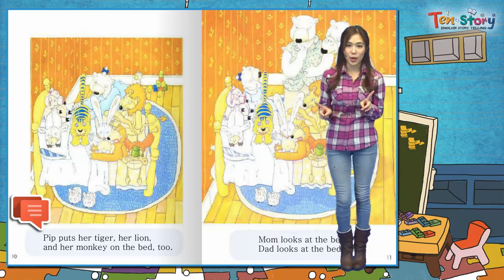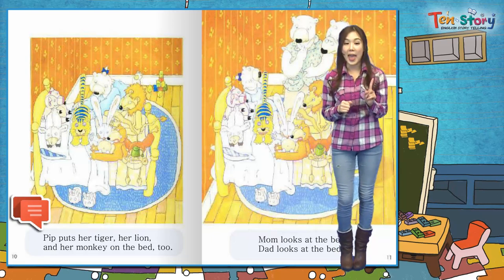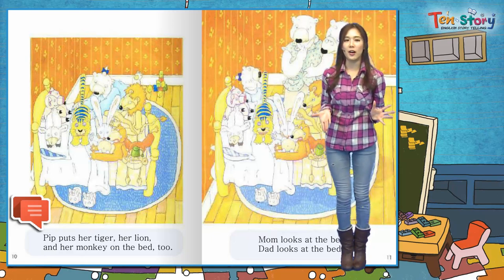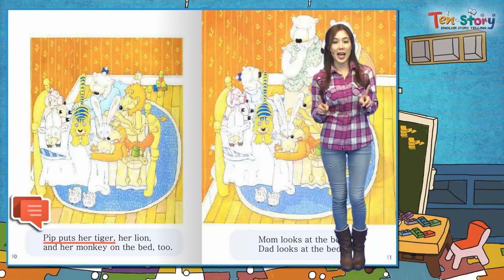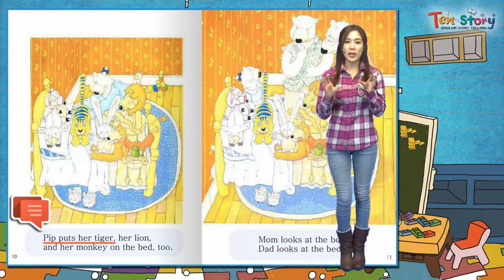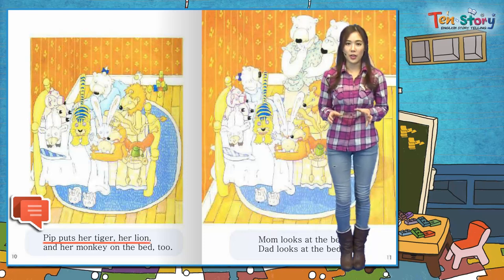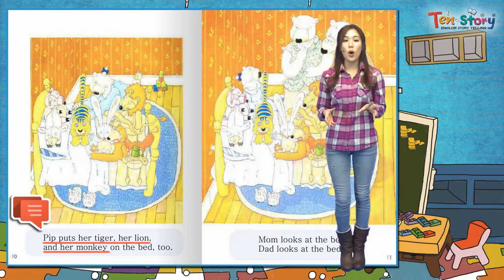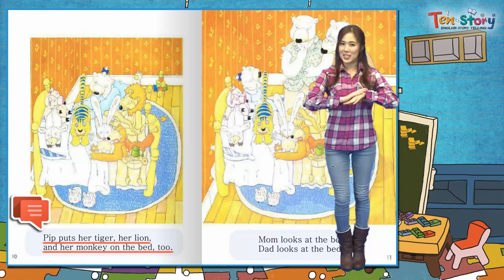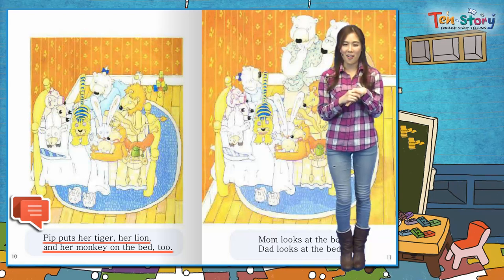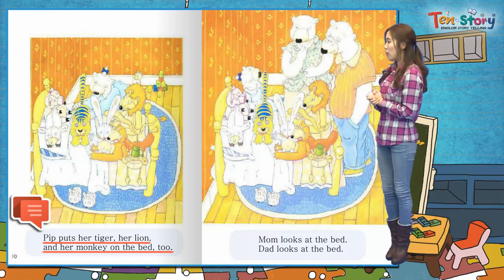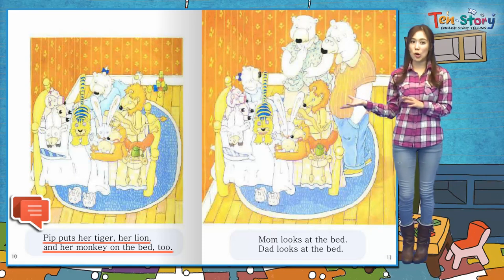Pip puts her tiger, her lion, and her monkey on the bed too. 나머지 친구들도 있겠죠? Pip은 그녀의 호랑이와, 그녀의 사자와, 그리고 그녀의 원숭이도 침대 위에 올려놓았어요. 다 침대 위에 올려놓았네요. 그림을 보니까 꽉 찼어요.